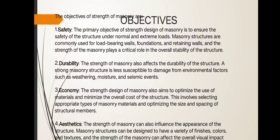From environmental factors such as weathering, moisture, and seismic events. Economy: The strength design of masonry also aims to optimize the use of materials and minimize the overall cost of the structure. This involves selecting appropriate types of masonry materials and optimizing the size and spacing of structural members. Aesthetics: The strength of masonry can also influence the appearance of the structure, which can be designed to have a variety of finishes, colors, and textures, and strength of masonry can affect the overall visual impact.